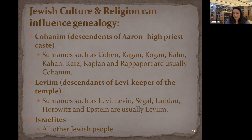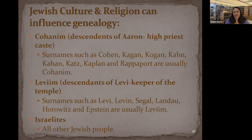Physical characteristic names include Schwartz (black), Brown, Gross (big), Klein (little), and Geller (yellow, or redhead in Yiddish) — most are German translations. Patronymics include names like Mendelssohn, meaning son of Mendel. 'Pretty names' were chosen names when governments required adoption of surnames — names like Rosenberg, Goldstein, or Hirsch (meaning deer). Priestly caste names — Kohanim descendants — include Cohen, Kagan, Kogan, Katz, Kaplan, and Rapaport. Levite names — descendants of Levi, keepers of the Temple — include Levi, Levin, Siegel, Landau, Horowitz, and Epstein.